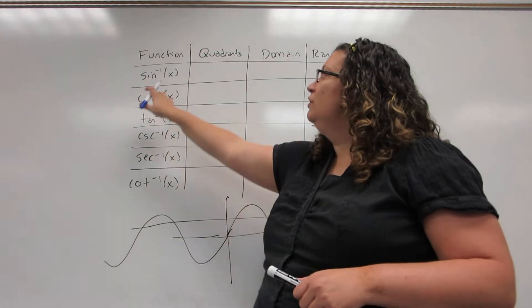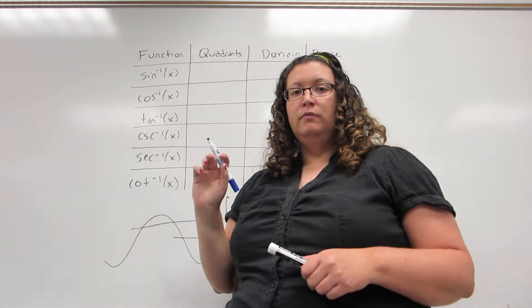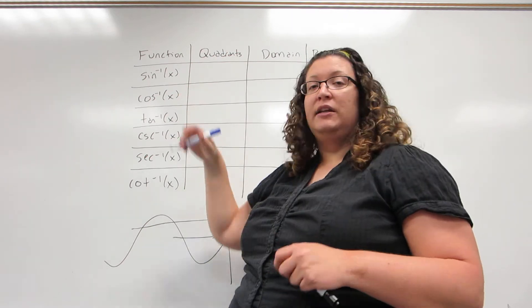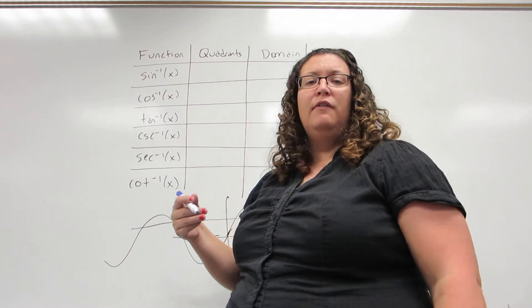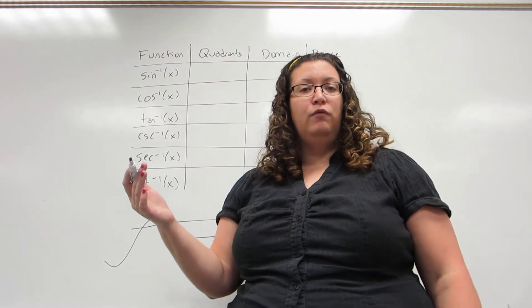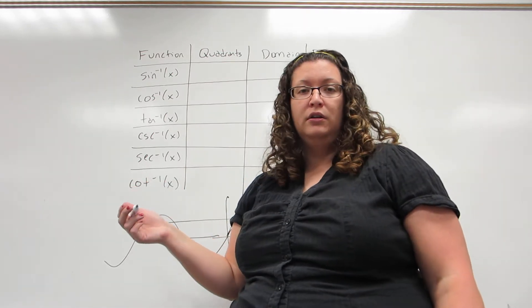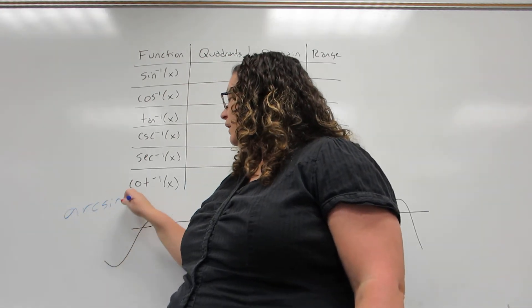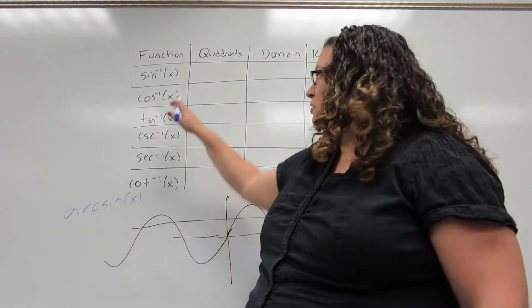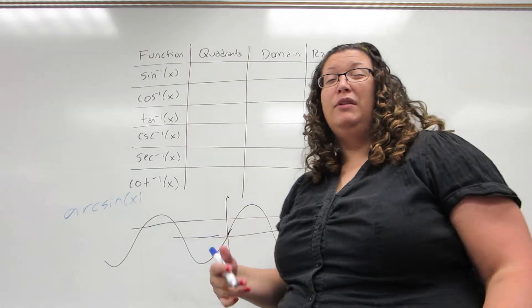A word about notation, we use the inverse, even though that's in the same place where we write squares and cubes, because there's no reason to ever write sine to the negative one power because that's just cosecant. Another symbol for these is arc sine of x. I tend to use the sine inverse notation simply because I'm lazy and it's shorter.